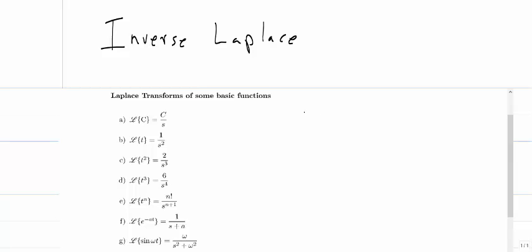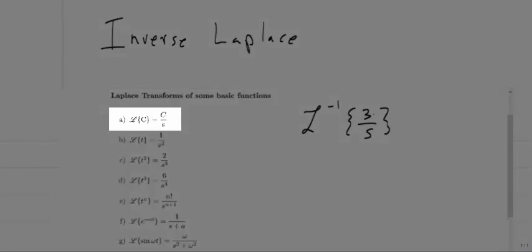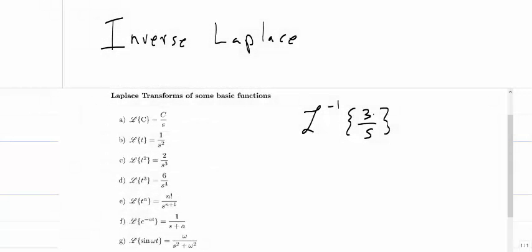For instance, if I wanted to find the inverse Laplace — notice I use that same L but with a negative 1 as an exponent to indicate an inverse function — of 3 over s, I would look at my table and say that's equal to the constant 3, since c equals 3. And now this is in the time domain. The same concept of linearity works with the inverse Laplace just as it does with the Laplace.